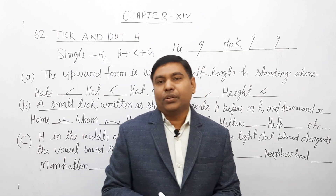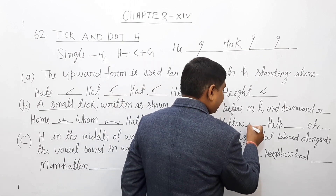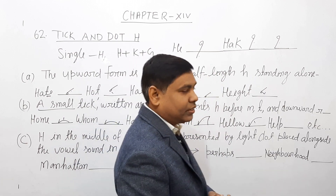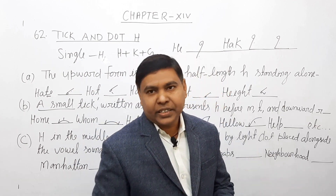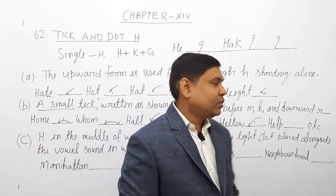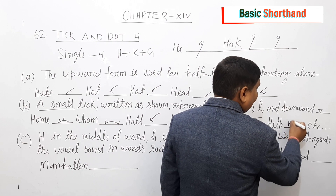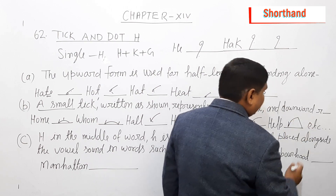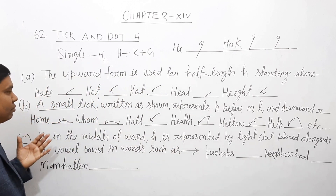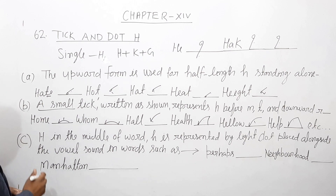'Hello' — तो आपको क्या करना है, small tick H ऐसे बनाना है और यहाँ पे Hello में O का sound लगा देना है। 'Help' word में भी आपको छोटा सा H और L और P बनाना है — Help हो गया। इन points की coding आप बना सकते हैं।